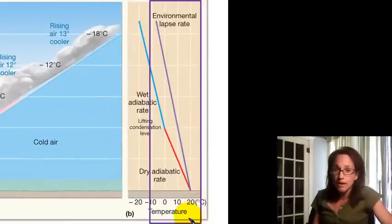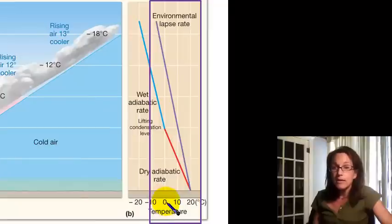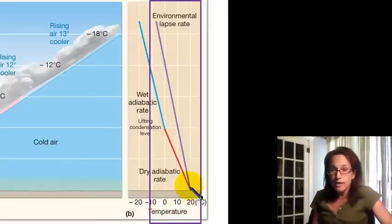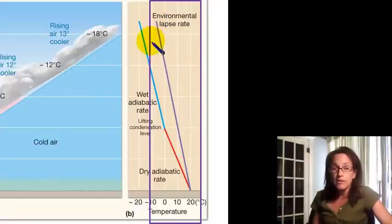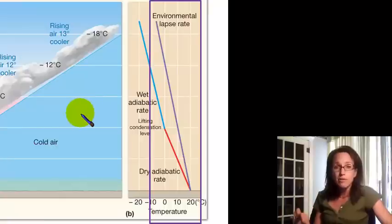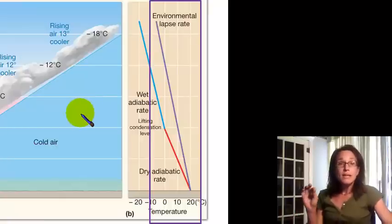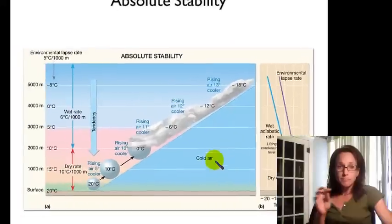We can plot that on the graph. Temperature is on the x-axis, and we start at zero elevation at the surface; as we go up in elevation, the temperature decreases. That's our environmental lapse rate — the actual measured temperature in the atmosphere.